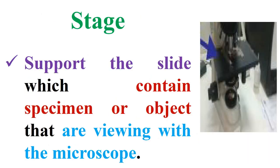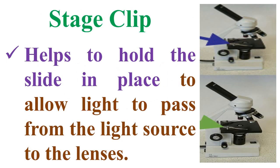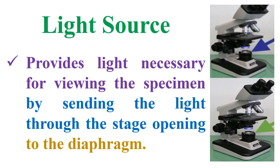The stage is used to support the slide which contains the specimen or object being viewed with the microscope. The stage clip helps to hold the slide in place, to allow light to pass from the light source to the lenses. The light source provides light necessary for viewing the specimen, by sending the light through the stage opening to the diaphragm.